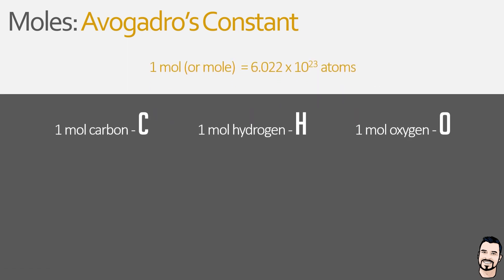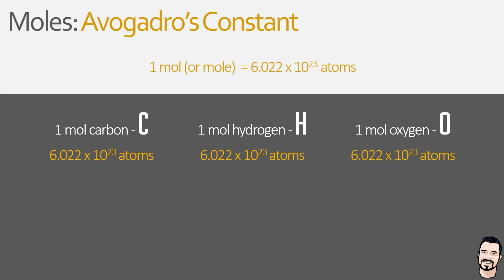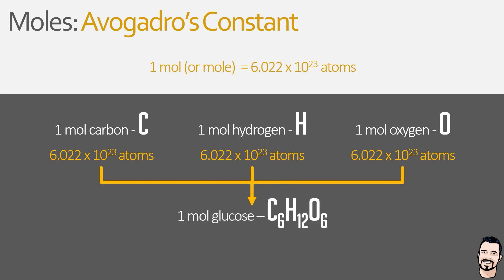A key point is that regardless of whether we have one mole of carbon, one mole of hydrogen, or one mole of oxygen, they will each contain 6.022 times 10 to the power of 23 atoms. But what if we were to combine carbon, hydrogen, and oxygen to form glucose? One mole of glucose will also contain 6.022 times 10 to the power of 23 molecules. So whilst one mole of something always contains the same number of entities, their weight will differ — and this is where we introduce the molar mass.